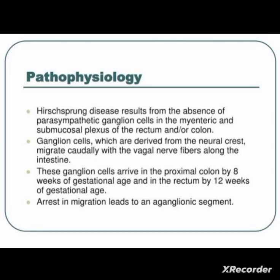The etiology is mainly genetic in origin, mostly autosomal. Hirschsprung's disease results from the absence of parasympathetic ganglionic cells derived from the neural crest. These ganglion cells arrive in the proximal colon by eight weeks of gestational age and in the rectum by twelve weeks of gestational age. An arrest in this migration leads to an aganglionic segment, which is why Hirschsprung's disease occurs.